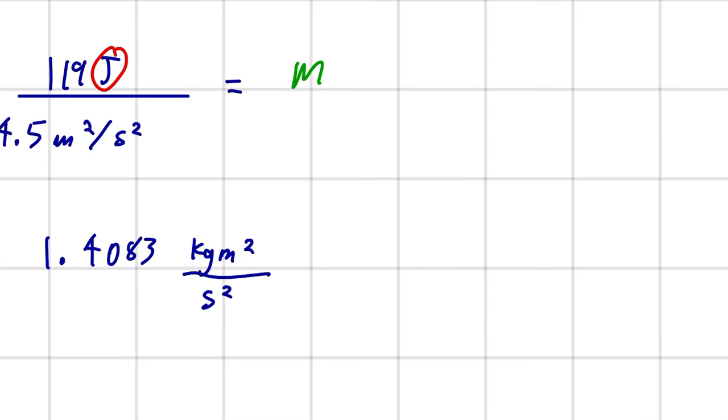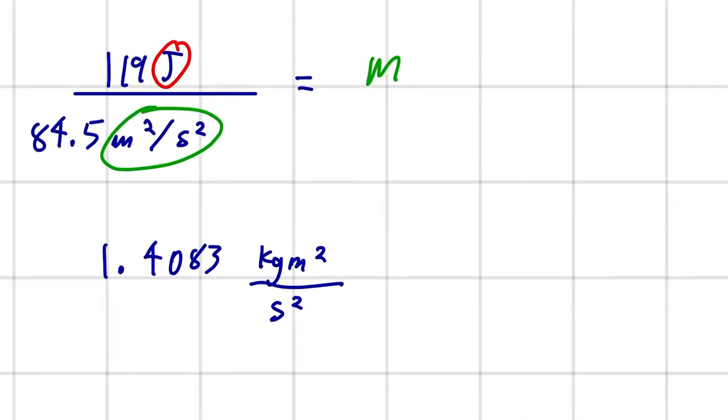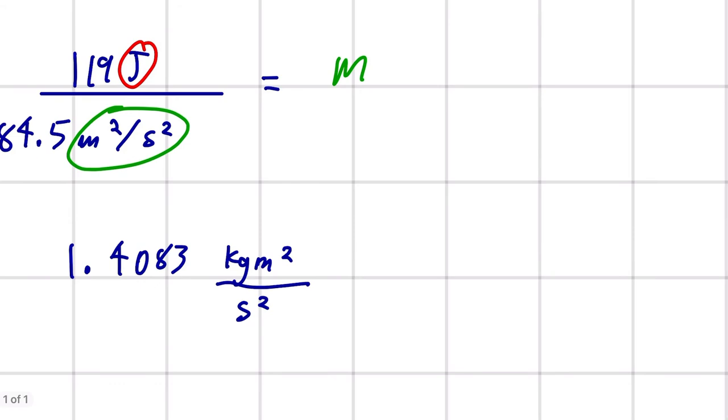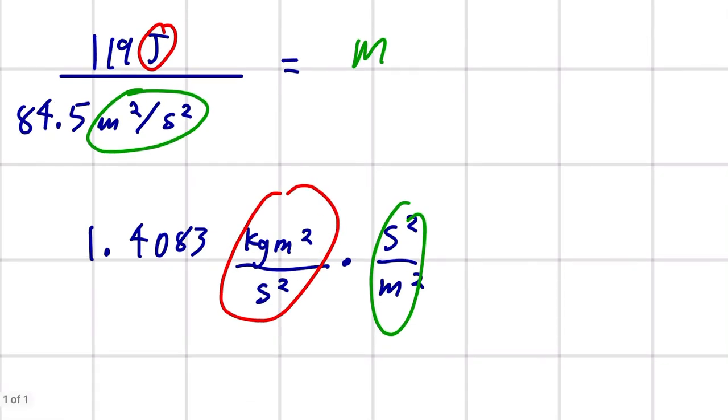And then, these units here, when we're dividing by meters squared per second squared, it's the same as multiplying the reciprocal. So, it's the same as multiplying the second squared over meters squared.